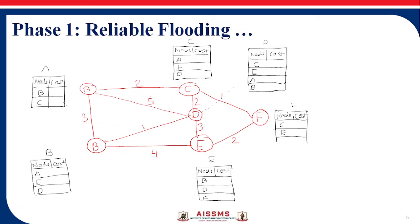So this is an example. Suppose we have a network like this, which includes six nodes. Node A is connected to C and B directly. We also have E and F. So A is connected to C, D, B, E, and F. All six nodes are connected, and the links are associated with a cost. The cost is given with their associated links.